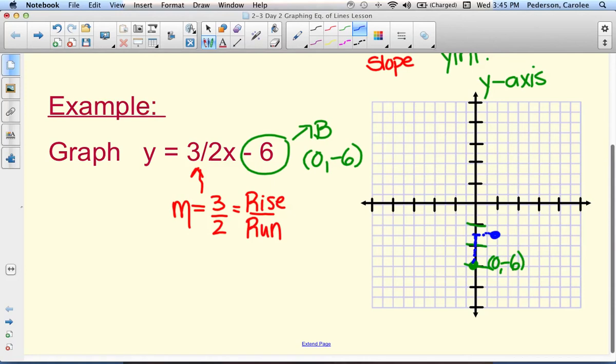Now we're going to rise 3 again from that blue ordered pair. 1, 2, 3, and then we're going to run 2 in a positive direction and create a new ordered pair in the red.